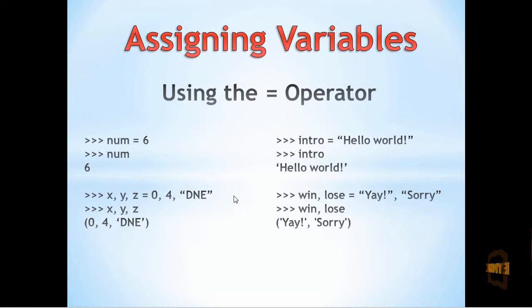Down the bottom here, we have examples of multiple assignments such that x, y, and z equal 0, 4, and 'DNE'. By separating the variables and values by a comma, we can assign x to the value of 0, y to the value of 4, and z to the string 'DNE' all in one line.